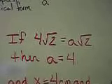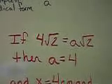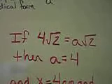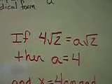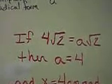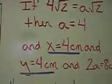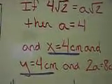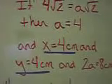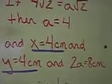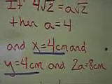If 4 radical 2 is equal to A radical 2, essentially I divide both sides by radical 2, they cancel out, so I know that my A value is 4. Well, then that means that X is 4 centimeters, and Y is 4 centimeters, and twice that for 2A means the entire side of the square is 8 centimeters.